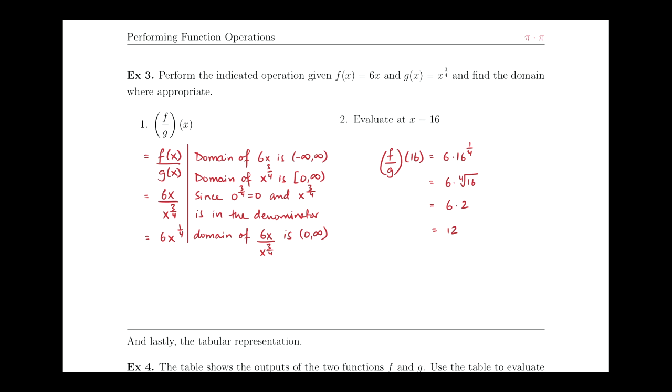Now, domain of 6x—6x, hopefully you remember, is going to be a linear function with slope 6. Linear functions are defined everywhere, so the domain of 6x will be negative infinity to infinity.